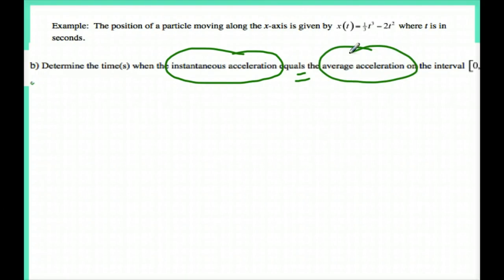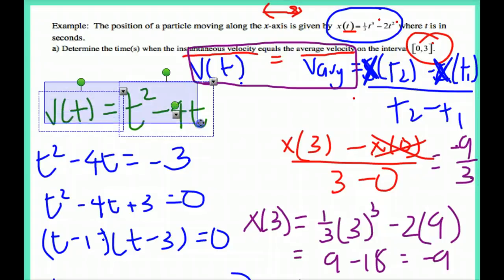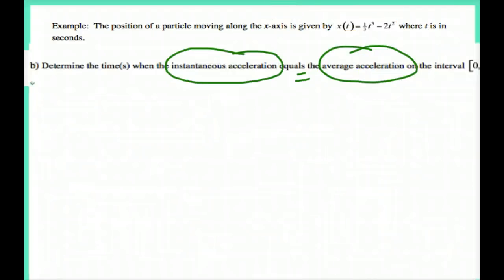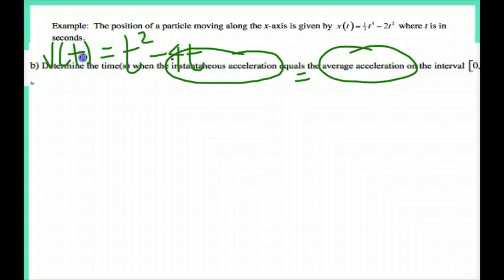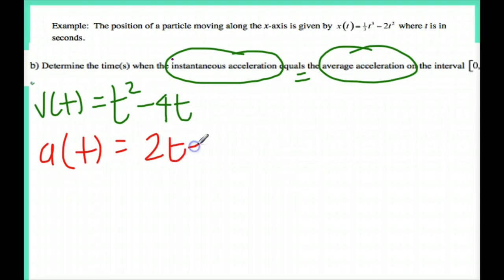Earlier we knew that our velocity was equal to t squared minus 4t. But I don't want the velocity for this problem — I actually want the acceleration, so I know acceleration equals the derivative of velocity, which is 2t minus 4.